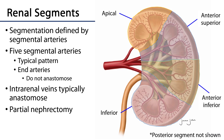The kidney is divided into several renal segments. Each segment is supplied by its very own segmental artery. Typically, the renal artery divides into five segmental arteries. These segmental arteries are end arteries, which means they do not anastomose with one another. Therefore, the segments they supply with blood are standalone elements — they can be surgically removed or resected in a partial nephrectomy without jeopardizing the parenchyma of the other segments.